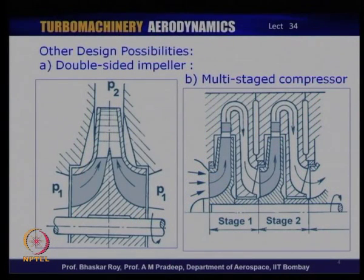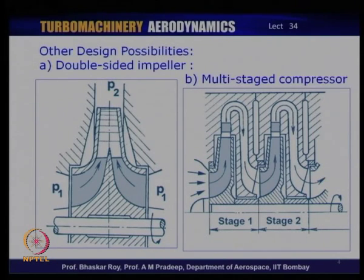There are a couple of varieties of centrifugal compressor that you may need to decide upon at the beginning of the design. One of them is the double-sided impeller, in which flow is brought into the centrifugal compressor from two sides. This is essentially done to increase the mass flow through the centrifugal compressor, since mass flow is somewhat restricted by its inlet which is smaller than its outer diameter. By allowing flow to come from two sides, you are almost doubling the mass flow, and then the compression is done over the two mass flows together through one centrifugal impeller.